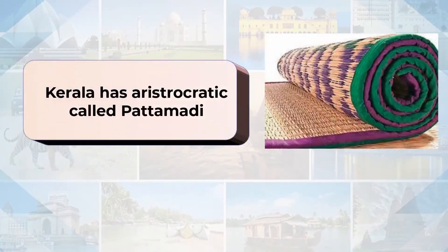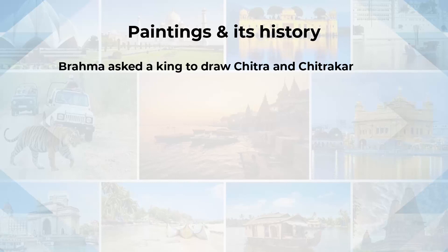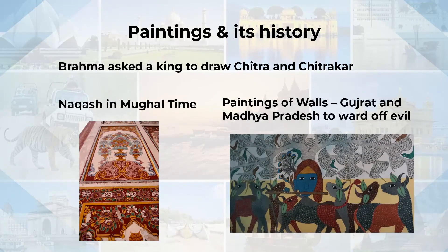Tamil Nadu is very popular for delicate and intricate mats and baskets. Kerala has a unique aristocratic item called Pata Madhi made by craftsmen. Now let's talk about paintings. Wall paintings are very popular in Gujarat and Madhya Pradesh, mainly done to ward off the evil eye.